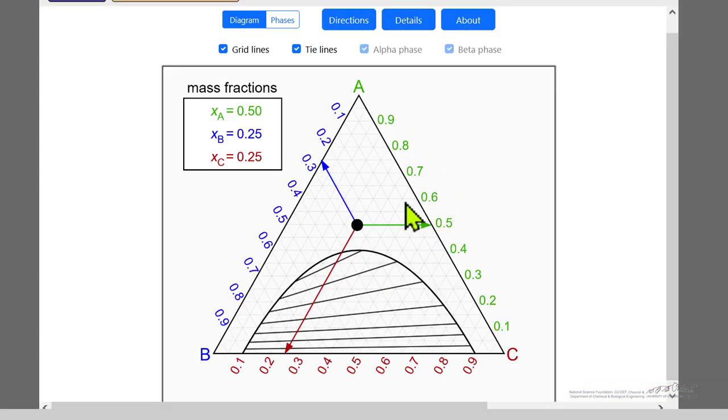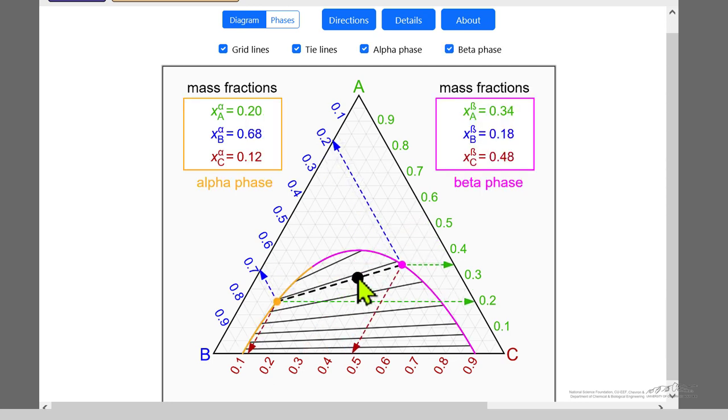Here we're in the one phase region. Pure A is at the top. We move this dot up, you can see we have more and more of A. Over here is pure component C. We can read the compositions for a ternary diagram.